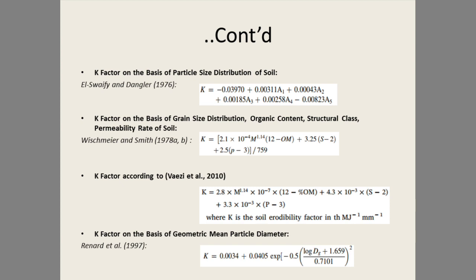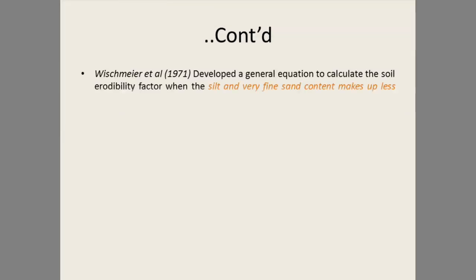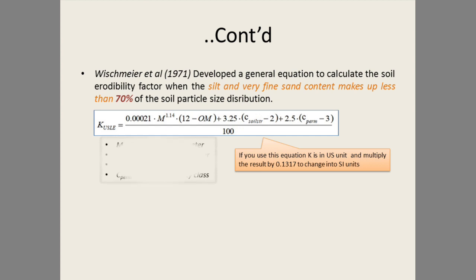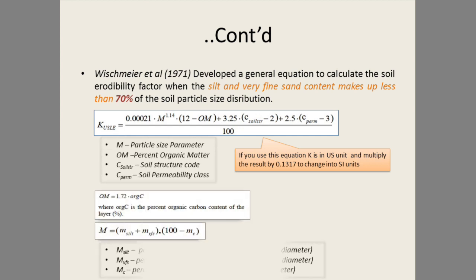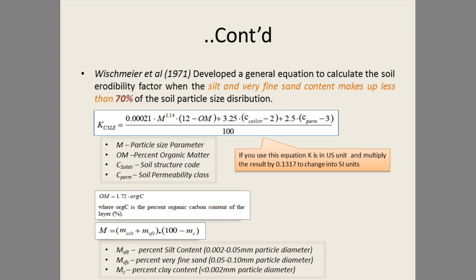Since K factor is regionally specific, choose your equation accordingly. Wischmeier (1971) developed the following general equation to calculate the soil erodibility factor when the silt and very fine sand content makes up less than 70 percent of soil particle size distribution. In this equation, M stands for particle size parameter, OM stands for percent organic matter, S is for soil structure code, and C_perm is for permeability class.